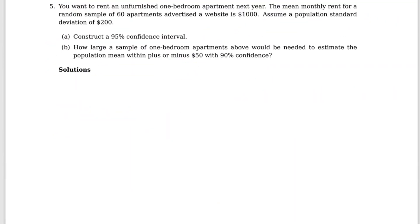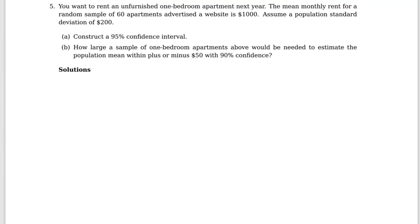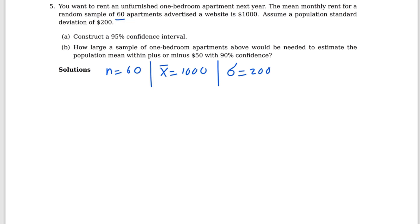Let me go to the next problem. You want to rent an unfinished one-bedroom apartment next year. The mean monthly rent for a random sample of 60 apartments advertised on a website is $1,000. So n equals 60, and x-bar equals 1,000. The population standard deviation is 200.